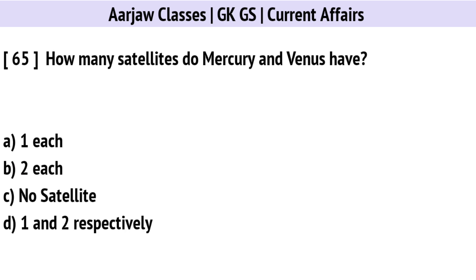How many satellites do Mercury and Venus have? Correct option is C: No satellites.